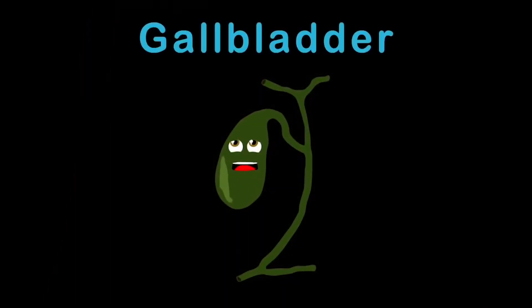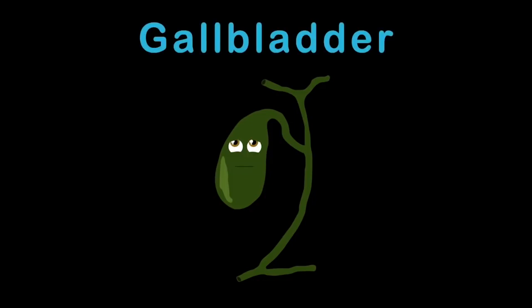I am your gallbladder. I am a sac-shaped organ, you see. I am a gallbladder. Your liver stores its bile in me. My surface is smooth to the touch. I am green in color, now you know that much.